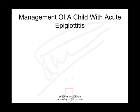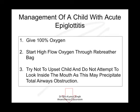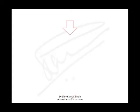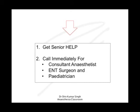For a three-year-old child with acute epiglottitis, the first thing to do is give 100% oxygen. Start them with high-flow oxygen through a rebreather bag. Try not to upset the child and do not attempt to look inside the mouth, because this may precipitate total airway obstruction. You need to be as gentle as possible. Then get senior help — inform your consultant anesthetist, ENT surgeon, and pediatrician.